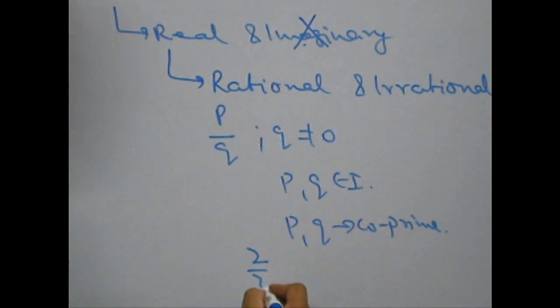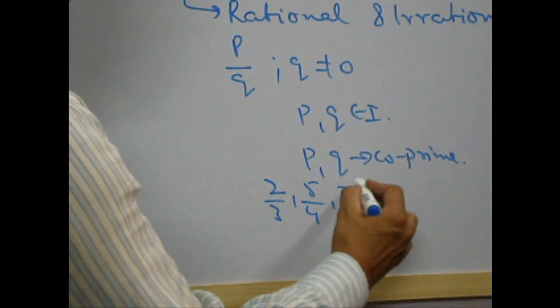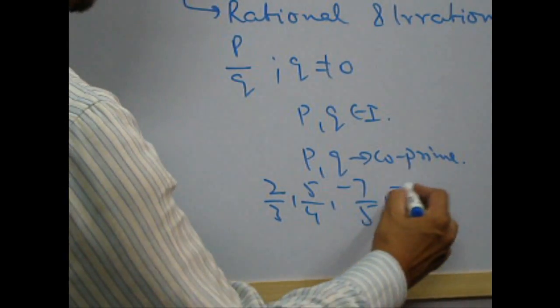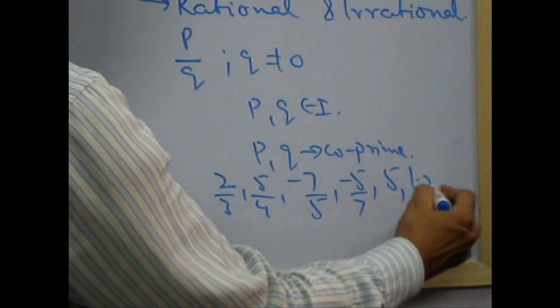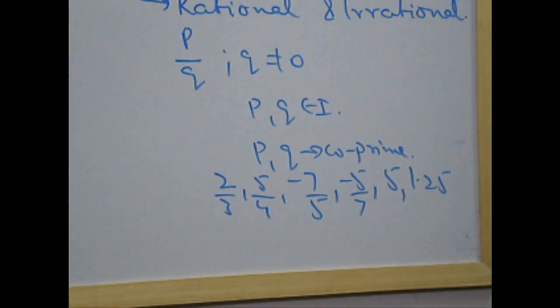So, 2 upon 3 for example, 5 upon 4 for example, minus 7 upon 5 for example, minus 5 upon 7. Just 5, 1.25 are all examples of rational numbers.